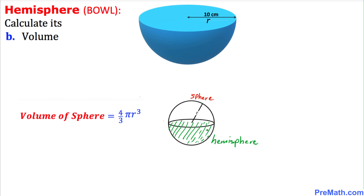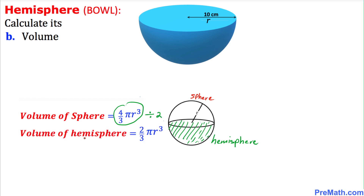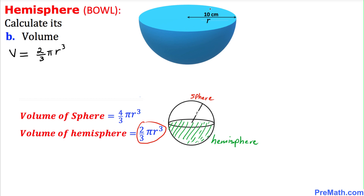Therefore the hemisphere's volume is going to be that divided by 2. So the volume of this hemisphere is going to be half of that, which turns out to be (2/3)πr³. Thus the volume V of this hemisphere is (2/3)πr³, where r is the radius, which is 10 centimeters.